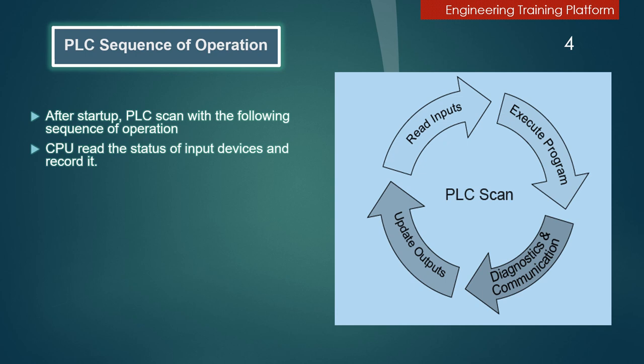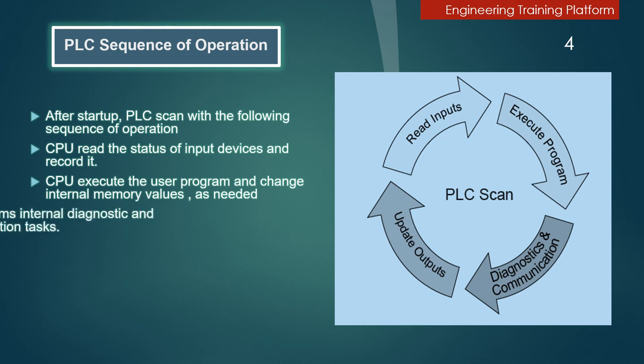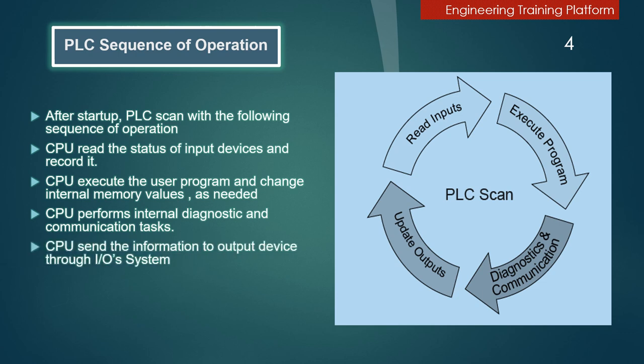The CPU reads the status of input devices and records it, then executes the user program and changes internal memory values as needed. After, performs internal diagnostic and communication tasks, and finally sends the information to output devices through I/O system. This process is repeated continuously when it is in run mode.